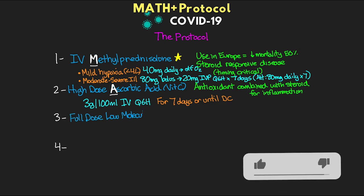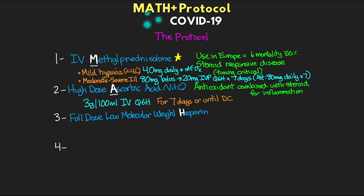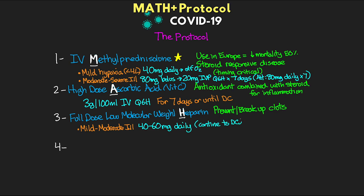The next component is full-dose low molecular weight heparin — this is where the H comes from. The importance here is to try to prevent and break up clots found in the more advanced stages of the disease. For mild to moderate illness, the recommendation is to give 40 to 60 milligrams daily, continued until discharged. For severe illness, which the protocol doesn't specifically address, it may be appropriate to consider full-dose unfractionated heparin systemically in these patients.